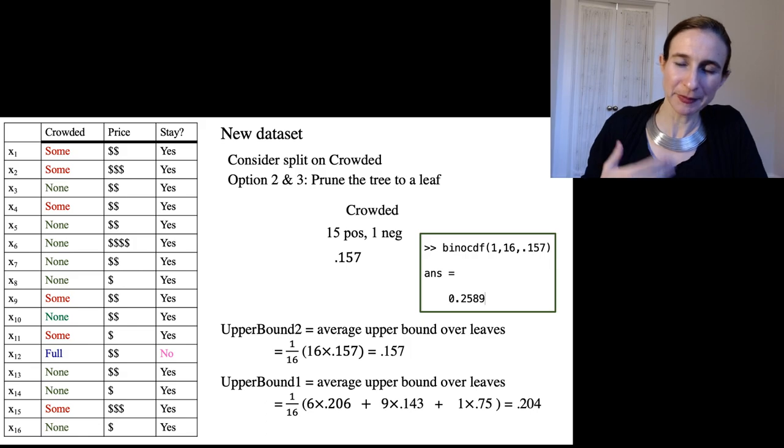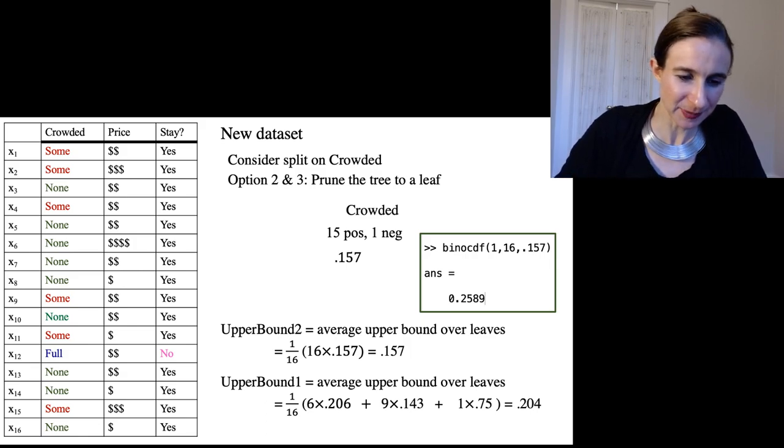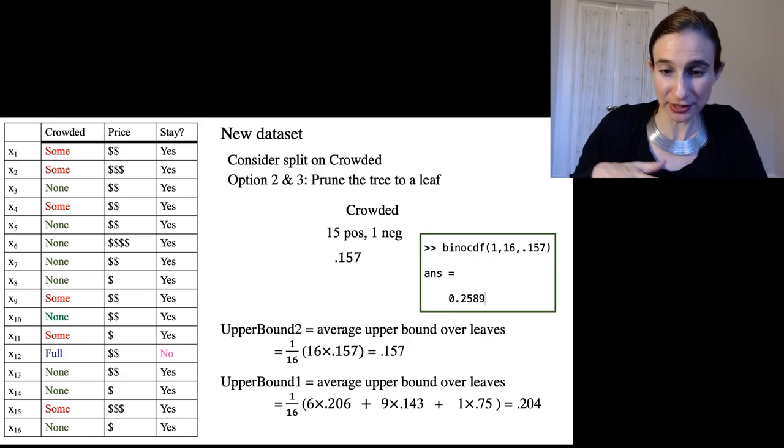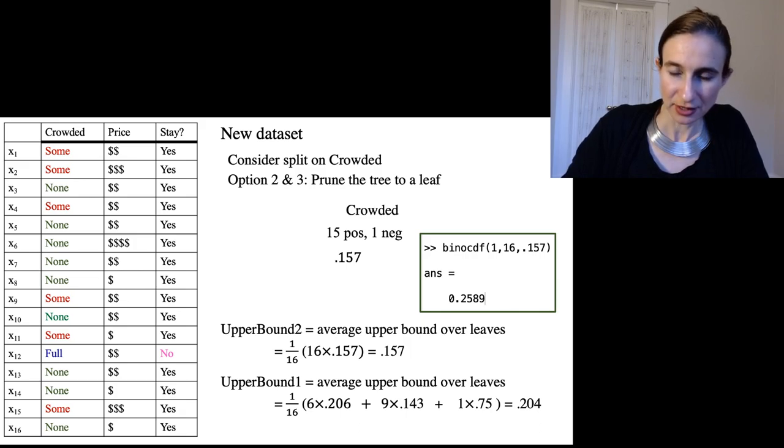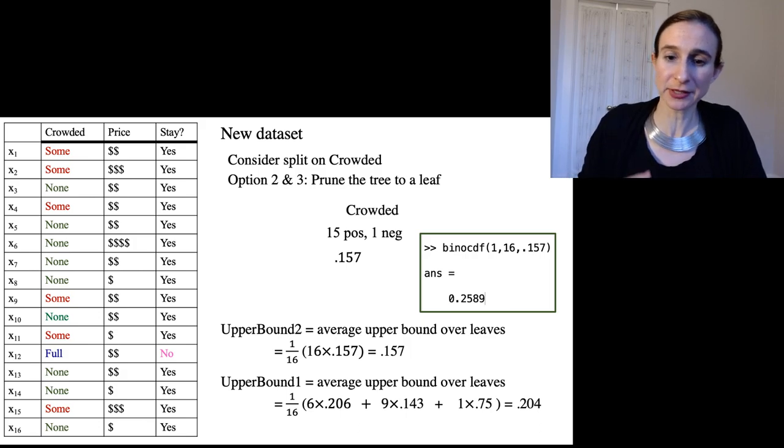All right, so now I'm just going to put back in the upper confidence bound from when I actually did the split. And as you can see, the upper confidence bound is lower in choices in options two and three. So actually this pruning criteria would prune this all the way back to a leaf. Okay, and we actually want that because that would help prevent overfitting. We really don't want that singleton in its own leaf. There we go.